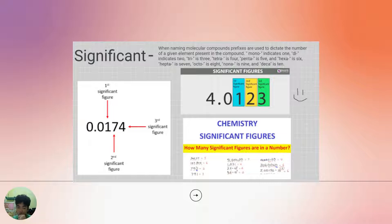Significant figures are the number of digits in a value, often a measurement, that contribute to the degree of accuracy of the value. We start counting significant figures at the first non-zero digit.